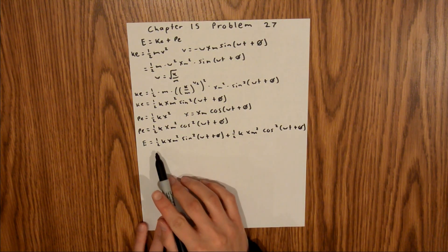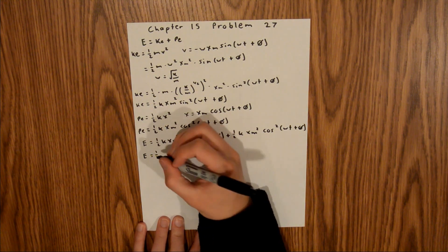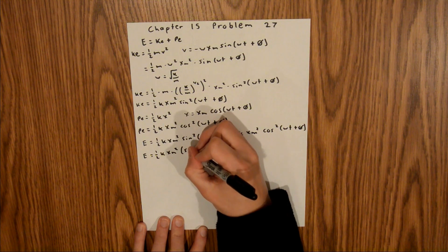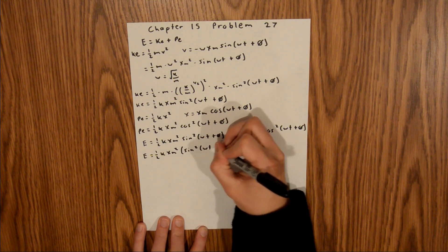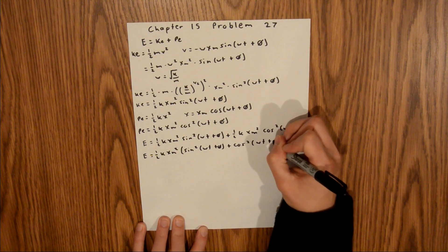And so we can pull out the 1 half kxm squared, and so we get E is equal to 1 half kxm squared of sine squared omega t plus phi, plus cosine squared omega t plus phi.